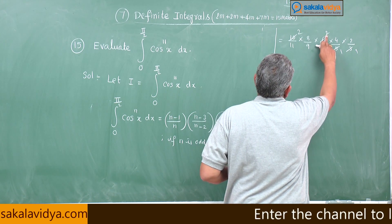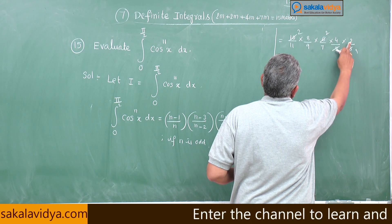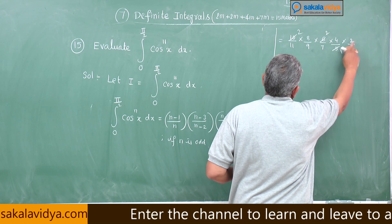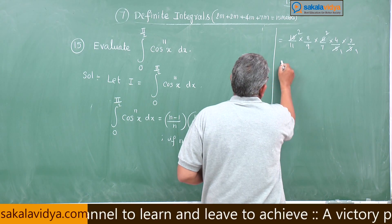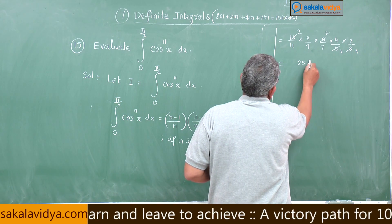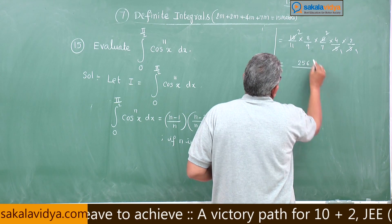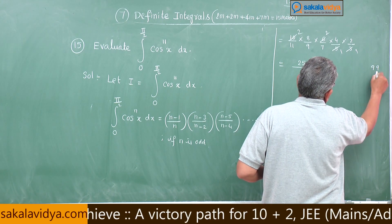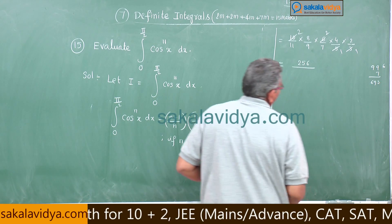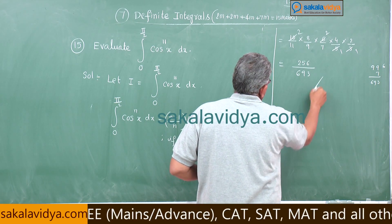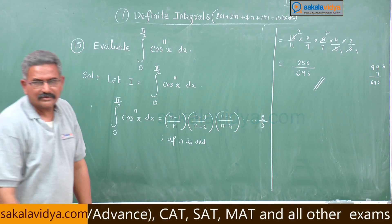16, 32, 32 into 2, 64 into 4. 64 into 4 means 256. 256 by 99 into 7, 63, 693. 256 by 693, this is the answer.